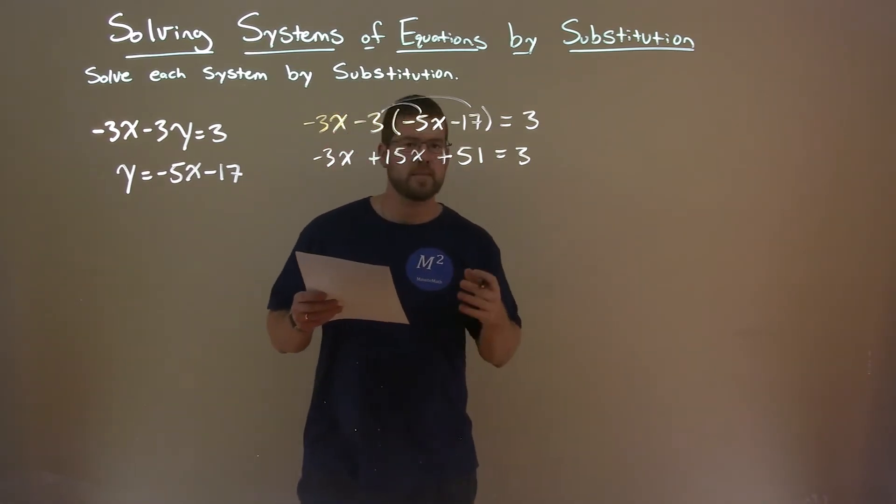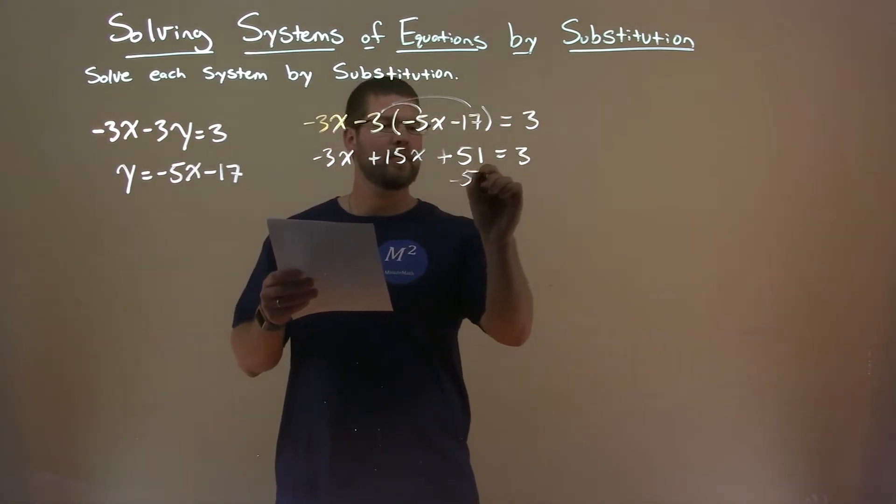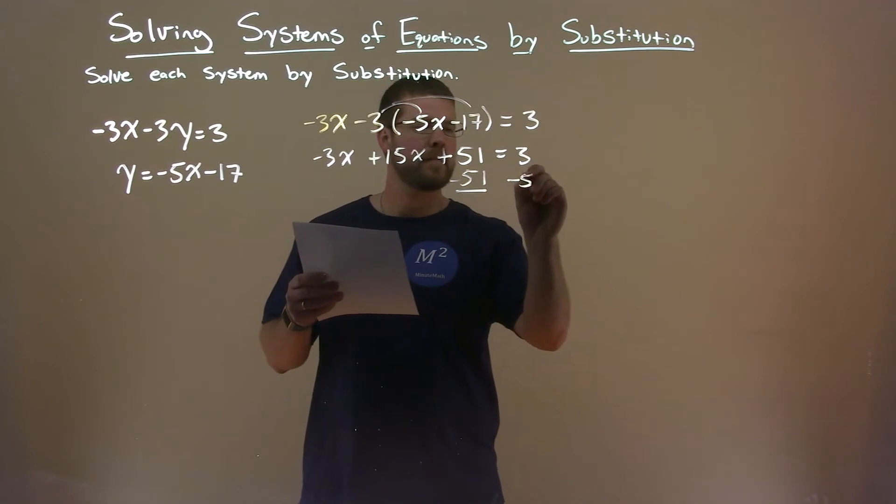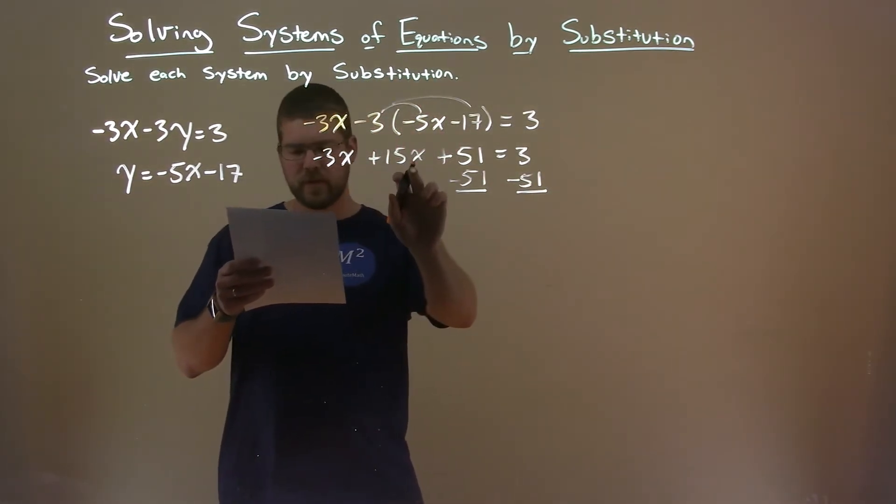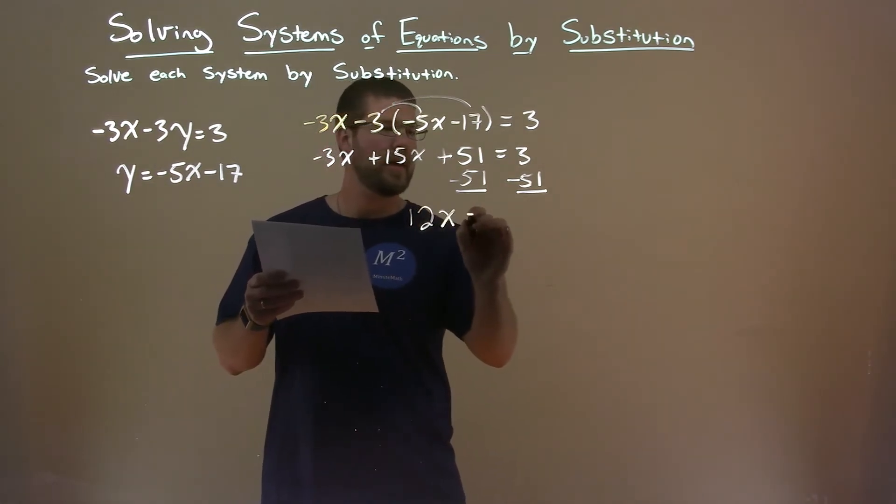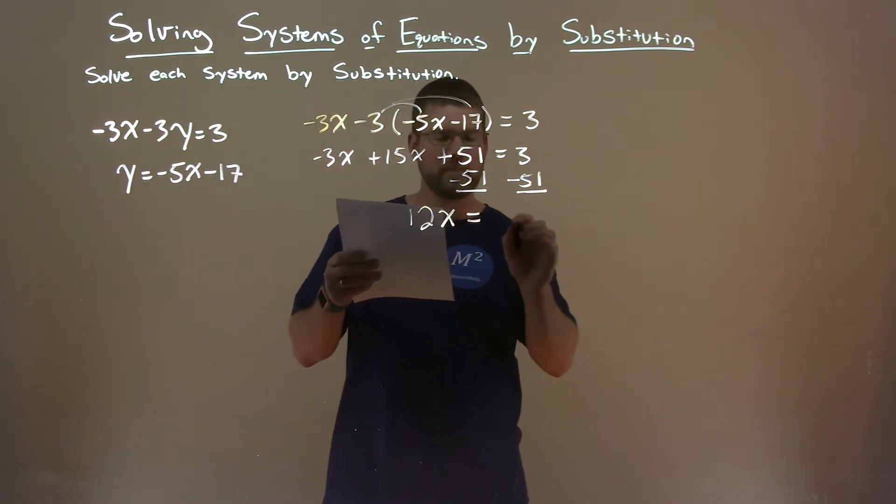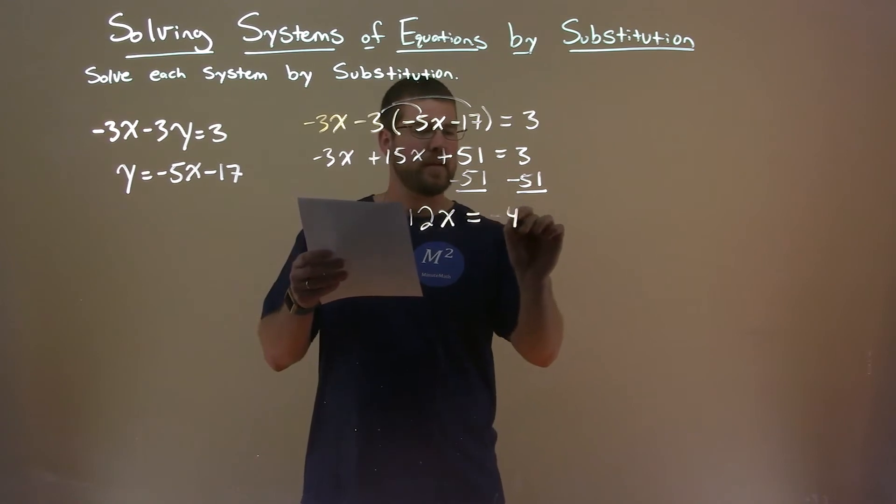From there, we still want to simplify. We subtract 51 from both sides. And negative 3x plus 15x here is 12x. And that equals 3 minus 51 is a minus 48.